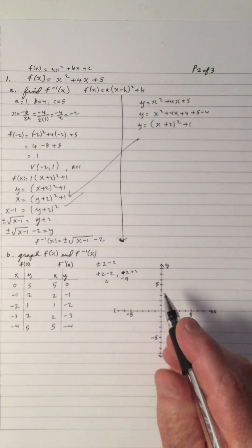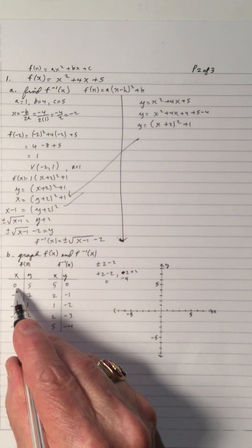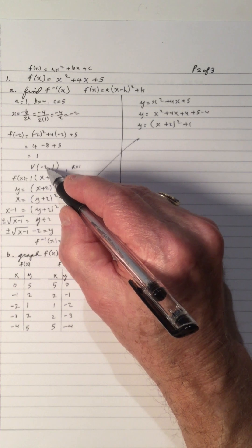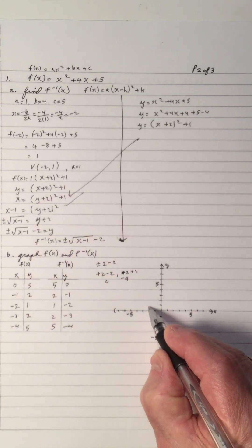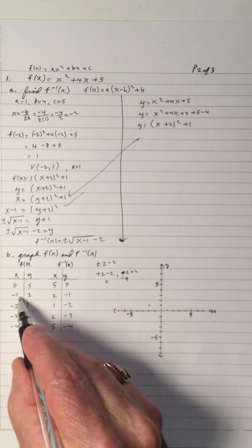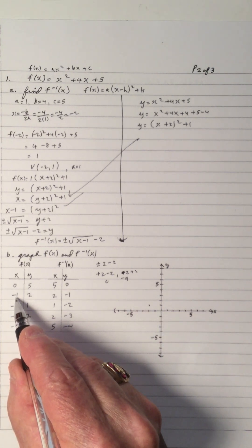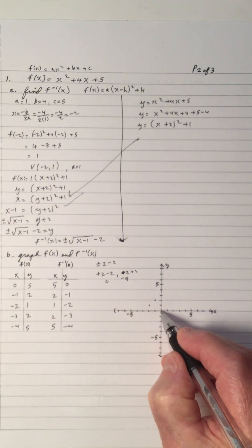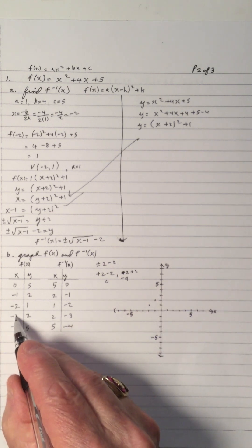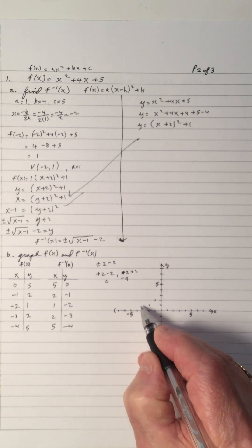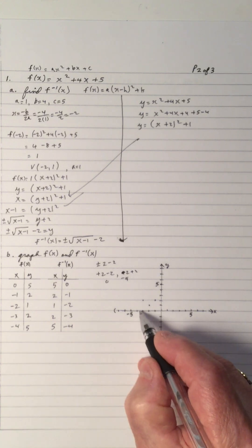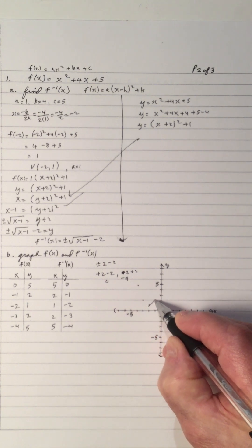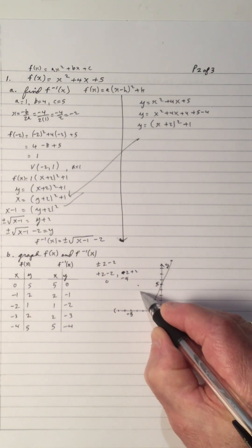And we want to graph that. So we have x is 0, which gives y is 5. The vertex is x is negative 2, y is 1. We've got x is negative 1, y is 2. x is 0, y is 5. And we've got negative 3 gives us 2, and negative 4 gives us 5. That's the parabola — that's the f of x.